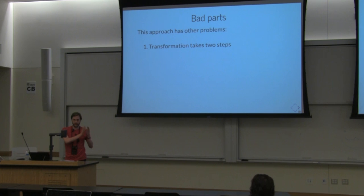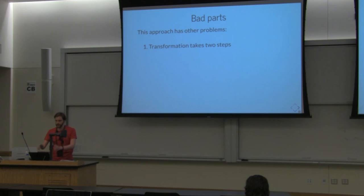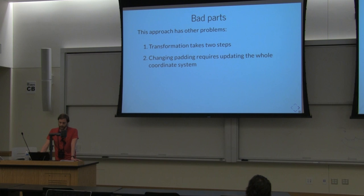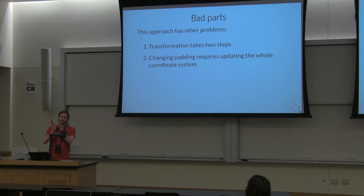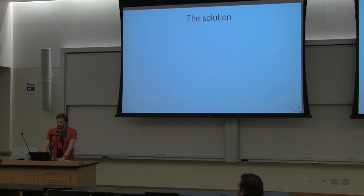There are still some problems with this approach. It's actually still multiple steps to perform this transformation: first squash the genome, then transform each SNP into the squashed genome, then go from squashed genome onto the canvas. That works but it's clunky. Another problem is that if you change the padding you need to update the entire coordinate system. We want to provide padding in pixels rather than base pairs, so if I zoom in and out I need to change the entire coordinate system. These calculations aren't expensive but it adds complexity and it's tricky to maintain and extend.